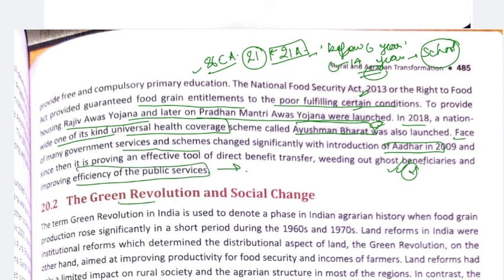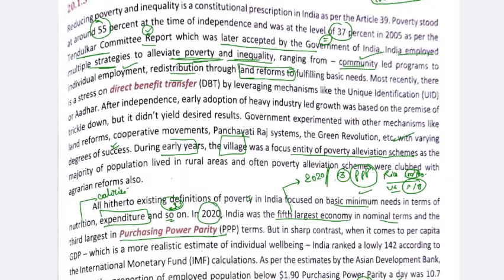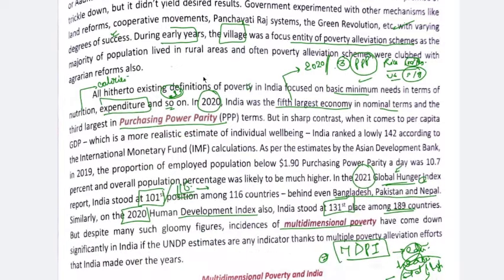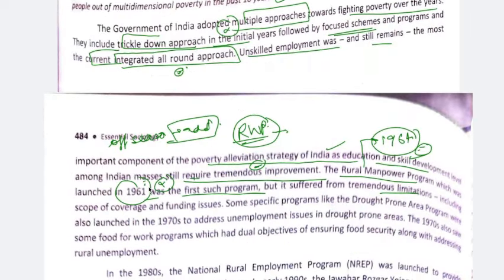To recap: the next topic is the Green Revolution and Social Change. We have seen data from the Tendulkar Committee — 55% poverty at independence down to 37% by 2005. India used multiple strategies: community development programs, DBT, Green Revolution, land reforms, panchayati raj systems. On global indices, India's figures on Hunger Index and Human Development Index were not good, but on the Multidimensional Poverty Index we are improving. The government's approaches evolved from trickle-down, to specific rural employment schemes, to integrated social security schemes covering children, women, the elderly, and the differently-abled.